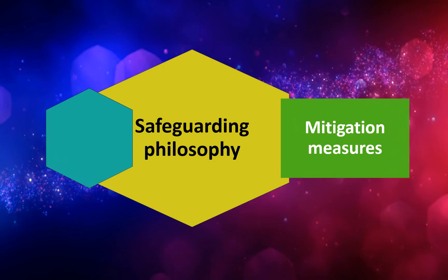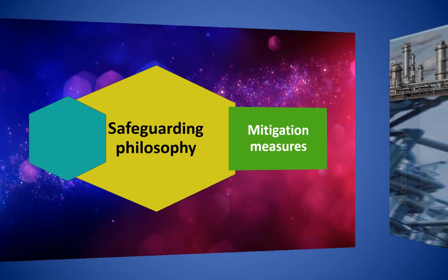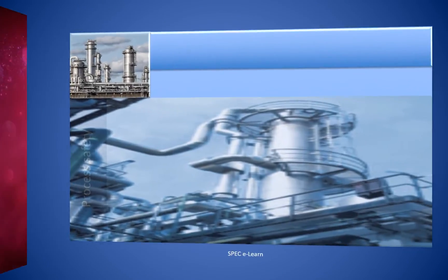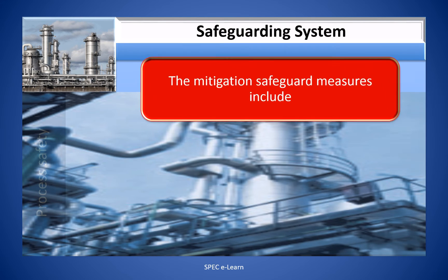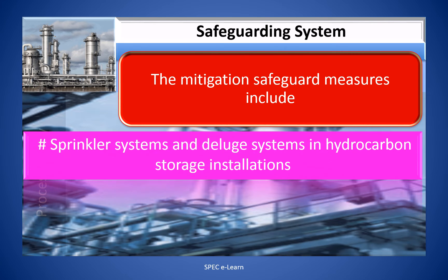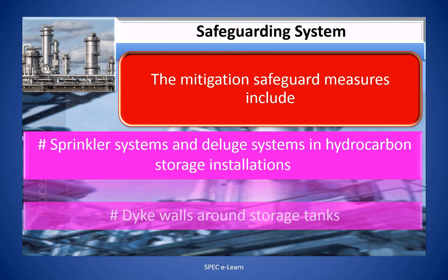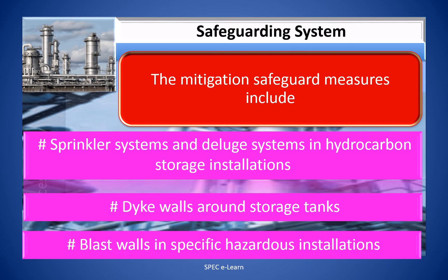Safeguarding philosophy mitigation measures include sprinkler systems and deluge systems in hydrocarbon storage and processing installations, dike walls around storage tanks, and blast walls in specific hazardous installations.